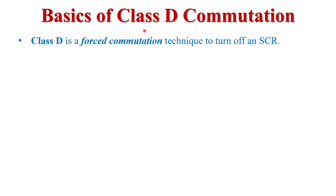Before I discuss Class D commutation, we must know what commutation means. Commutation is basically a process of turning off the device. In terms of SCR, the turn-off process of SCR is known as SCR commutation. If we turn off an SCR with the help of external circuitry, that turn-off process is called force commutation. So Class D commutation is basically a technique of force commutation to turn off the SCR.